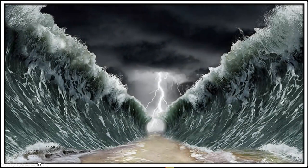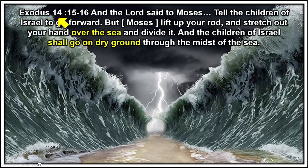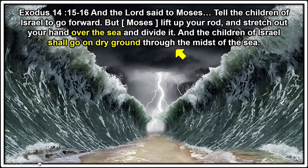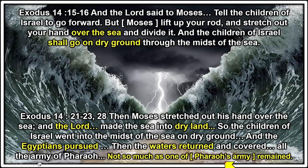Let's continue with a little bit of history — going back to the Israelites escaping from Egypt. They crossed the Red Sea on dry ground. In Exodus we read: 'The Lord said to Moses, tell the children of Israel to go forward. Lift up your rod and stretch your hand over the sea and divide it, and the children of Israel shall go on dry ground through the midst of the sea.' Then the waters returned and covered the Egyptians — not one of Pharaoh's army remained.